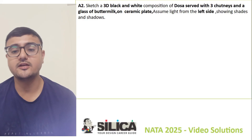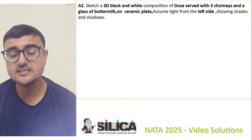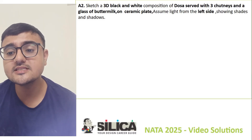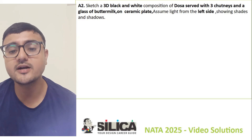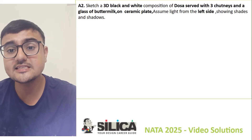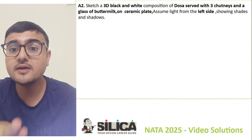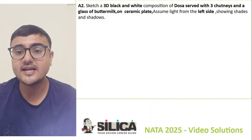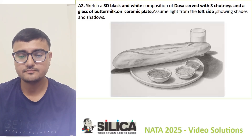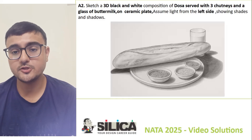In this composition, texture is very important. You have to create a composition of dosa served with three chutneys and a glass of buttermilk. You have to create texture for the ceramic plate. It is clearly mentioned that the light source is on the left side, so make sure your shadows are reflected on the right side.